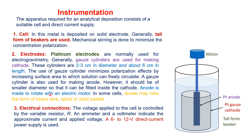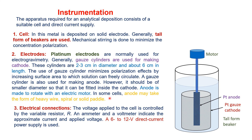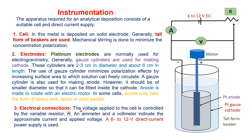A gauze cylinder is also used for making the anode, but the anode should be small enough to fit inside the cathode. The anode is made to rotate with an electrical motor, and in some cells the anode may take the form of a heavy wire spiral or solid paddle. For electrical connections, the voltage applied to the cell is controlled by variable resistors, and an ammeter and voltmeter indicate the approximate current and voltage applied. A 6 to 12 volt DC supply is used for electrodeposition.